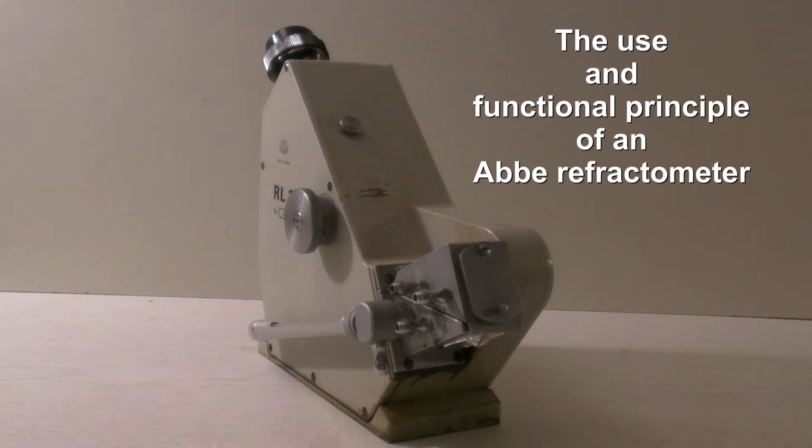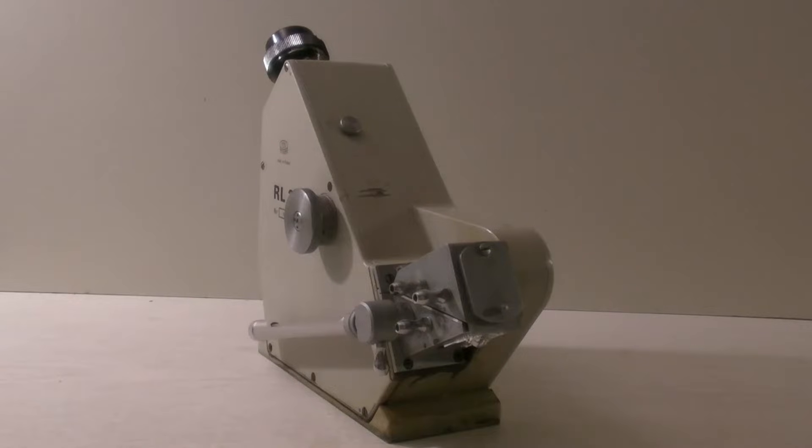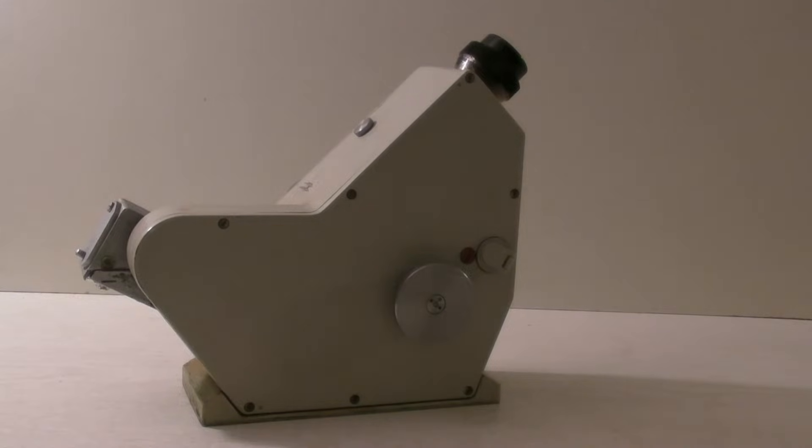The use and functional principle of an Abbey refractometer. The Abbey refractometer is used to measure the refractive index of substances. This way the purity of a substance or the concentration of a solution can be determined.